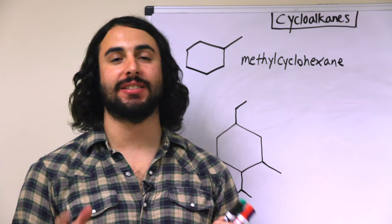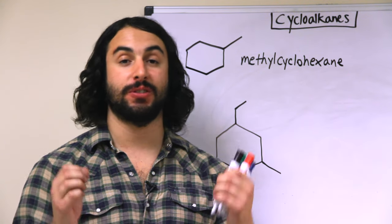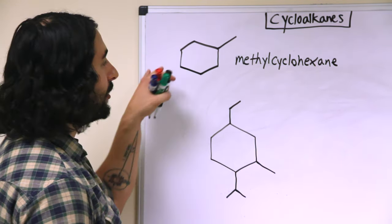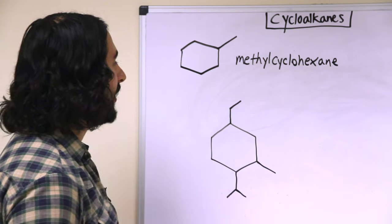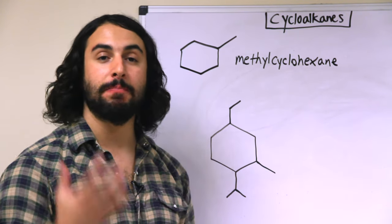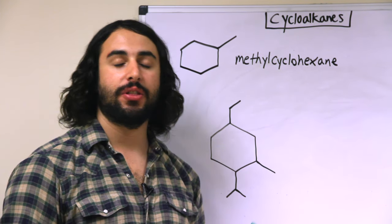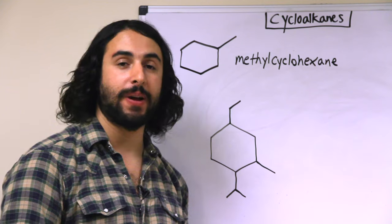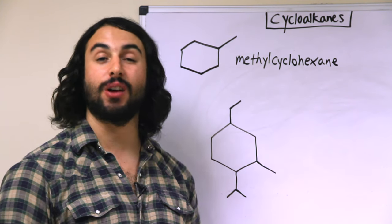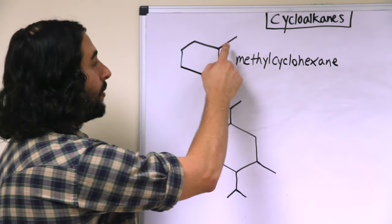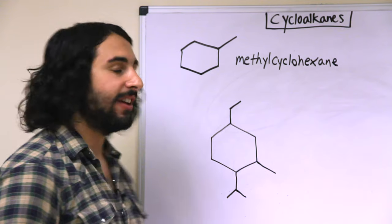what happens when we're looking at cyclic compounds with substituents. Let's take a look at a simple example here. We have a cyclohexane with a methyl substituent. Now things are a little bit different with a cyclic compound compared to a linear compound because of the symmetry. There's only one group here and it doesn't really matter where